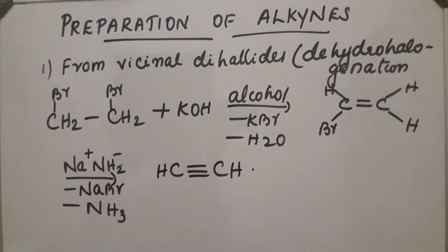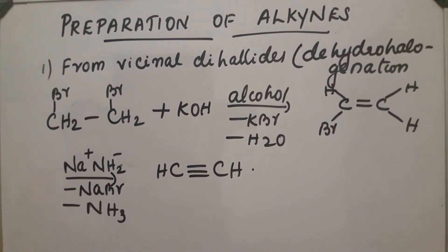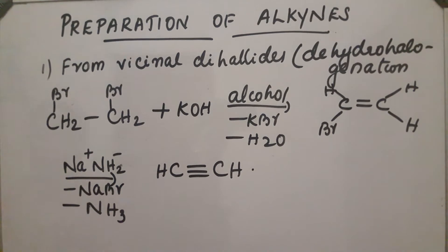This is a two-step process from vicinal dihalide. In the first step, in the presence of alcoholic KOH, it gets converted into an alkene. In the second step, on reaction with sodamide (NaNH2), it gets converted into an alkyne. This completes the first preparation.